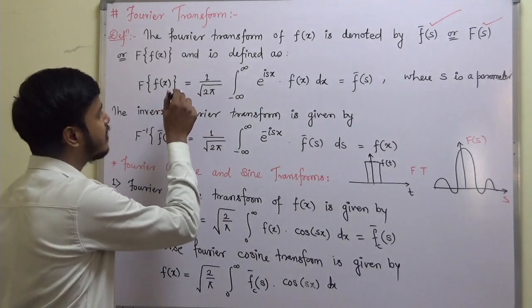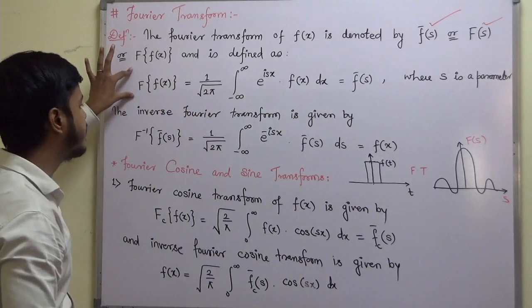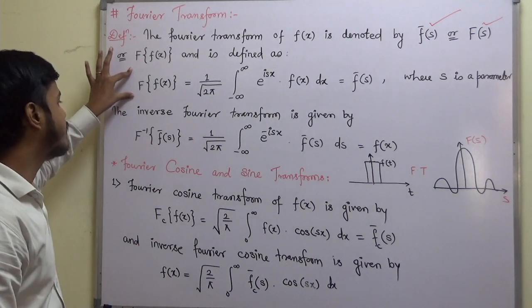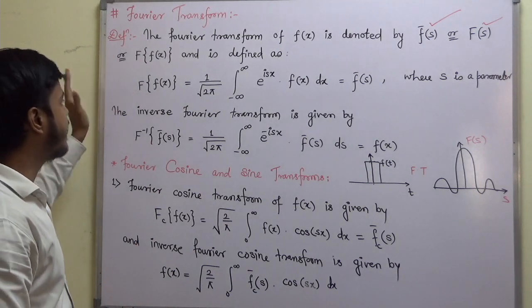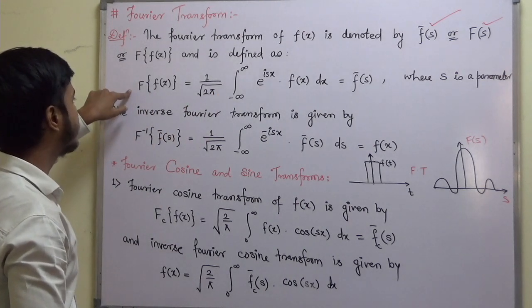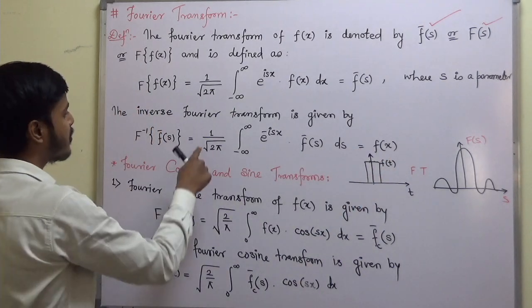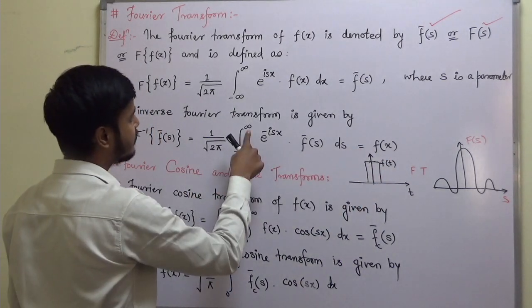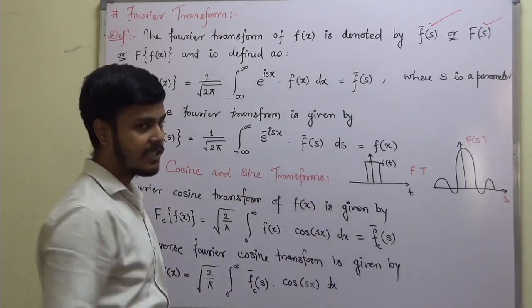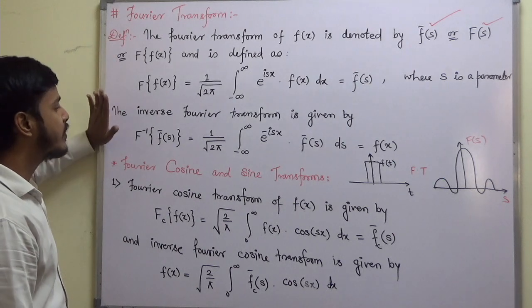If you have a Fourier transform, you can easily define the inverse Fourier transform by taking the inverse. The Fourier and inverse Fourier cancel each other, giving back f(x). The inverse Fourier transform is: f(x) = (1/√(2π)) ∫ from −∞ to ∞ e^(−isx) f̄(s) ds.